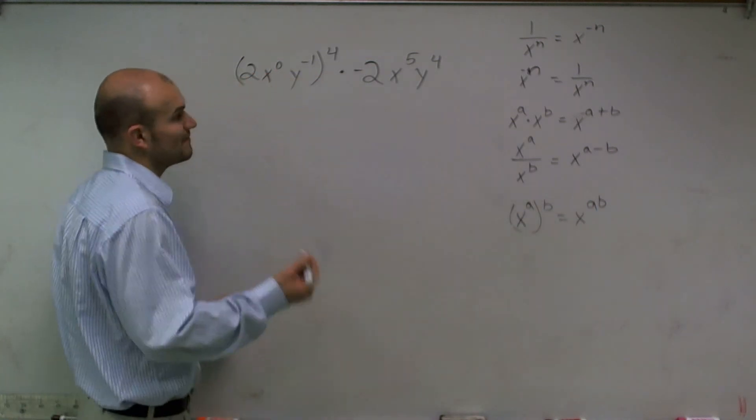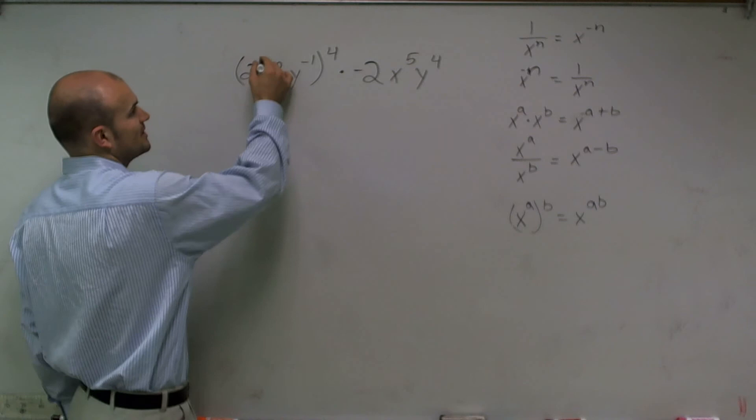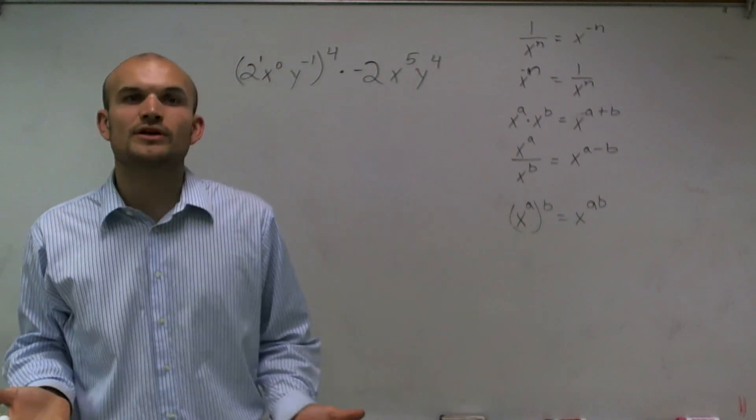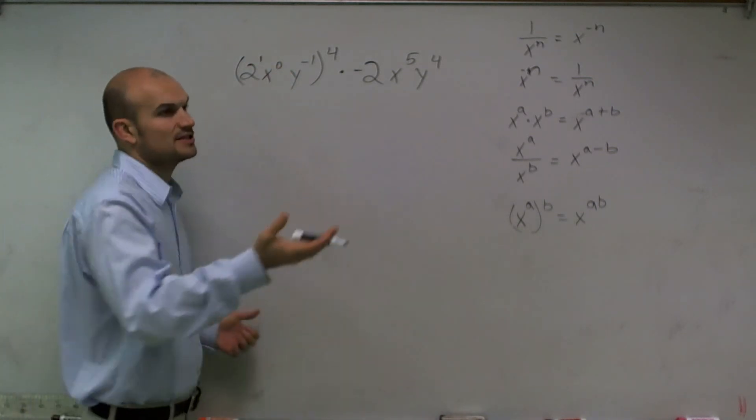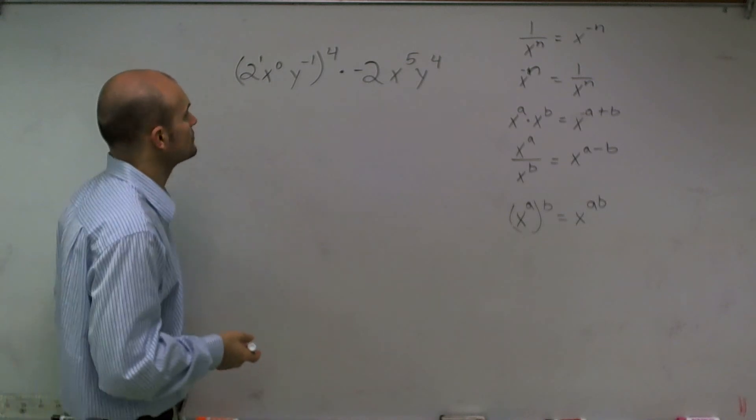Sometimes we have exponents, sometimes we don't. You can see here, this 2 does not have an exponent. So we can put in the number 1, because 2 raised to the first power we know equals 2.